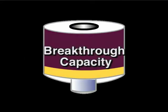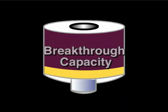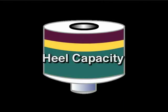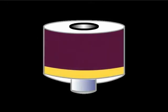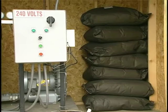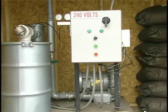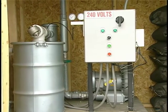Saturation capacity is the maximum amount of organic material the carbon can hold. Breakthrough capacity is the amount of organic material the carbon can hold before significant organic concentration begins to exit or break through the carbon bed. Heel capacity is the amount of organic material remaining in the carbon bed after it has been regenerated. Working capacity is the difference between breakthrough capacity and heel capacity, and represents the amount of organic material that can be absorbed in each operating cycle. A typical working capacity is 10 to 20 pounds of contaminant per 100 pounds of carbon.